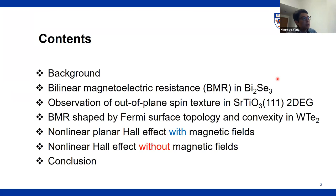So this is my content. I'll give some brief background, then move to introduction of bilinear magnetoresistance — in short, BMR — in various materials: topological insulator bismuth selenide, then two-dimensional electron gas in strontium titanium oxide [111] direction, then tungsten ditelluride, which is one of the typical materials in Weyl semimetals. Then I will move to nonlinear planar Hall effect with and without magnetic field, and then conclude.